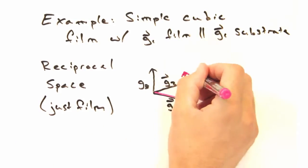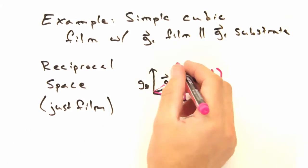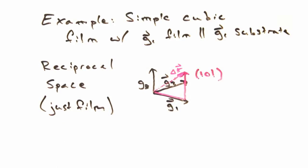Does it matter which G vector we align to? Nope, so long as it's a film G vector that is off of the sample normal. Gotcha. So let's choose the sample 101 peak to align our delta K vector to and keep the source and detector fixed in this position.